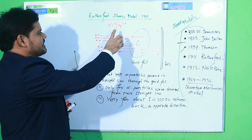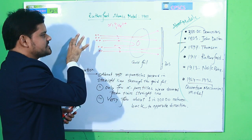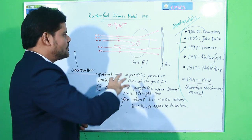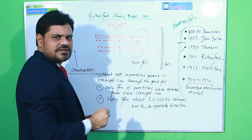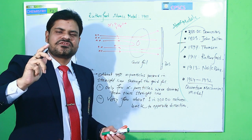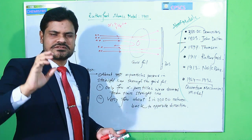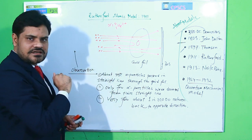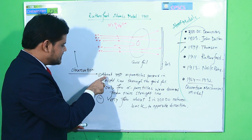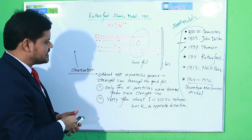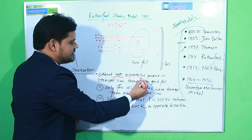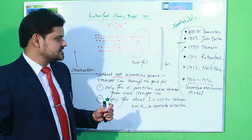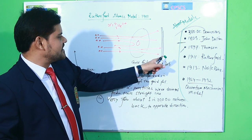The alpha particle is double charged. When Mr. Rutherford passed alpha particles through the gold foil to know the inner composition of atoms, he observed some results. First, about 99% of the particles passed in a straight line through the gold foil and made a flash of light on the zinc sulfide screen.